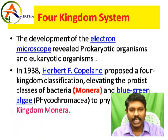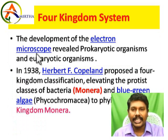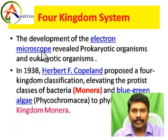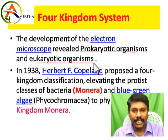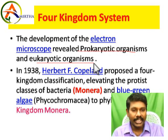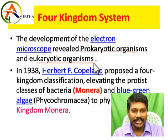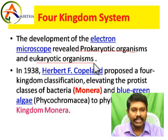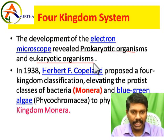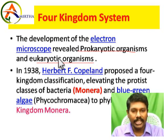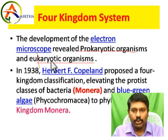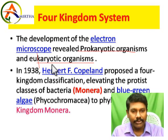The advancement of the electron microscope revealed prokaryotic organisms and eukaryotic organisms. What is prokaryotic? In prokaryotic organisms, the nuclear membrane is absent — no proper, well-defined nucleus. Eukaryotic organisms have a true nucleus — a well-defined nucleus is present.